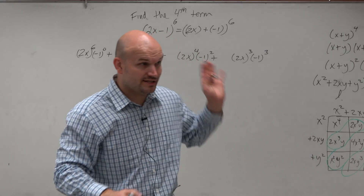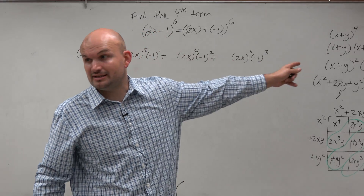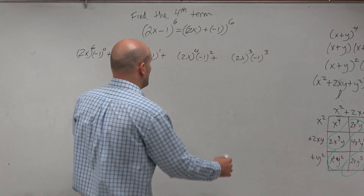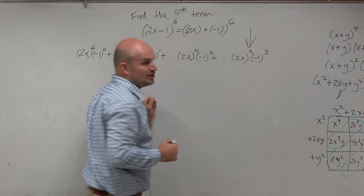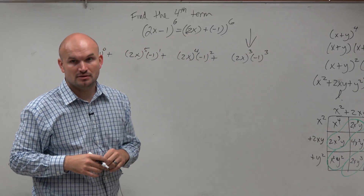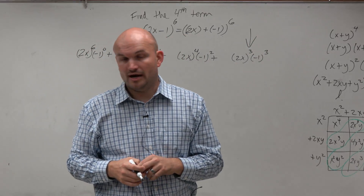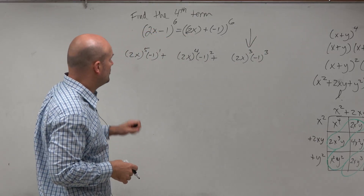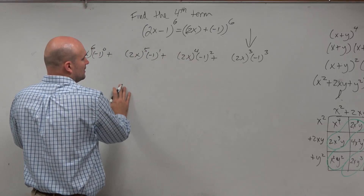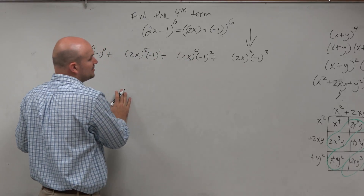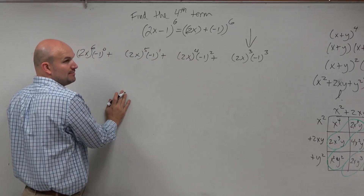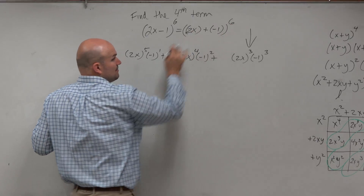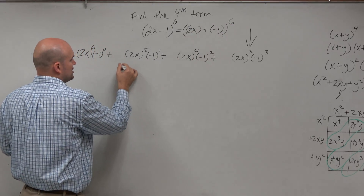Now I can stop — I don't need to continue doing this like I did in the last problem. They're just asking me for the fourth term, right? I don't need to know all this other stuff. I'm going to go ahead and create my binomial expansion to the sixth power, which means I'm going to have seven terms.